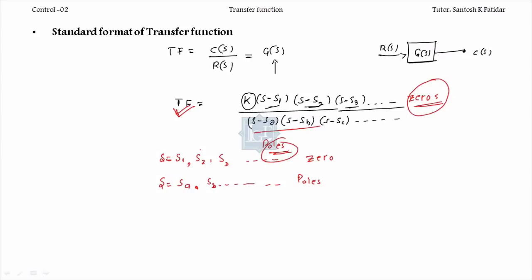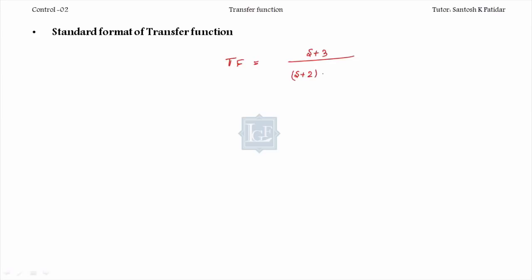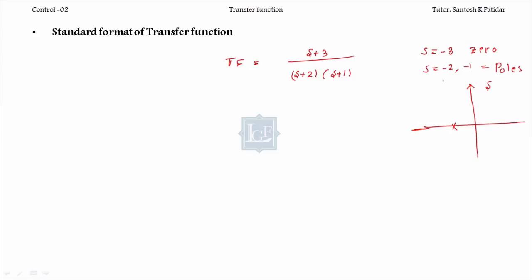For example, consider transfer function (s + 3) divided by (s + 2)(s + 1). Here s = -3 is your zero, and s = -2 and s = -1 are the poles. In the s-domain, at -1 and -2 we get poles, and at exactly -3 we get a zero. The zero is represented by a circle and the poles by a cross in the s-plane. In the control system, numerator gives zeros and denominator gives poles.